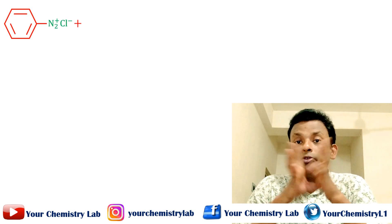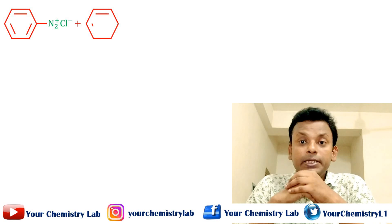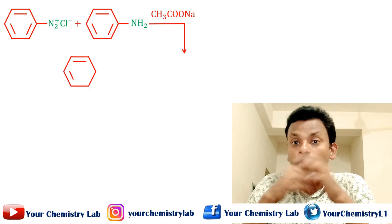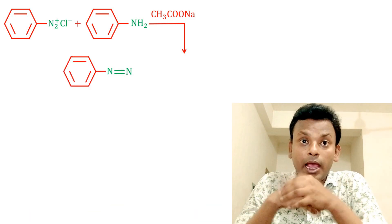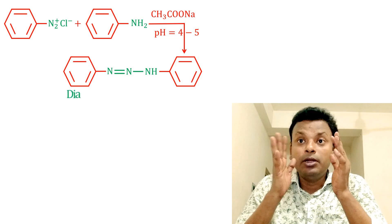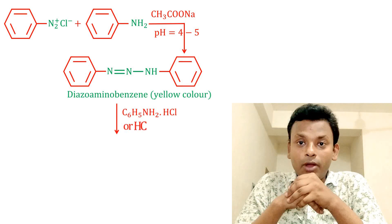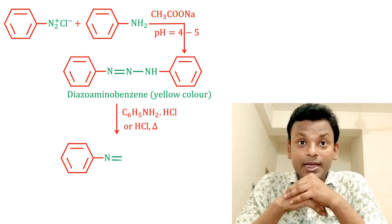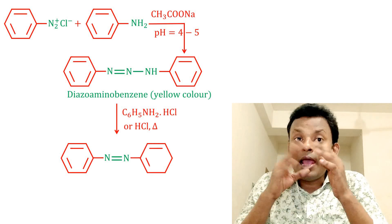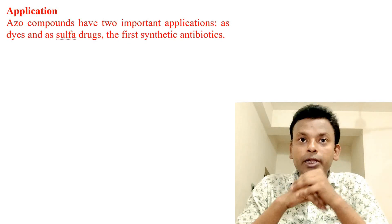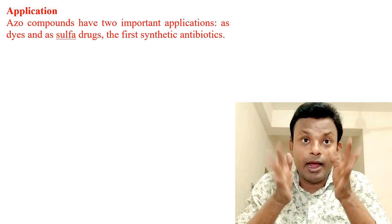Reaction summary for primary amine: diazonium chloride reacts with aniline in presence of CH3COONa at pH 4 to 5, giving diazoamino benzene (yellow color). This compound then reacts with aniline hydrochloride (C6H5NH2·HCl) or HCl on heating to give para-amino azo benzene, which is orange-yellow in color.